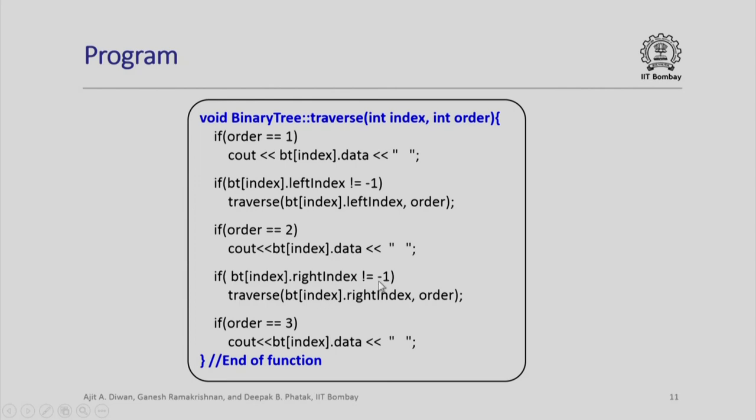If the right index is minus 1 or not, we will traverse it repeatedly. And these traversals are entirely dependent upon what is the order stated. If order is 1, if order is 2, if order is 3, I simply output bt index dot data. This simple mechanism permits us to do the traversal in all the 3 possible orders depending upon the parameter that we give.